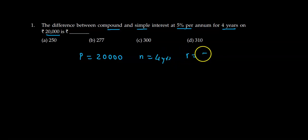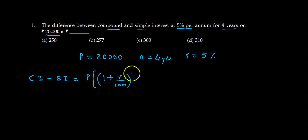...5% per annum. P and R values are the same for compound and simple interest. So the formula for their difference is: CI minus SI is given by P into (1 plus R upon 100) raised to N minus 1, minus NR upon 100.